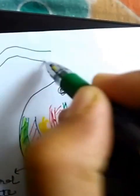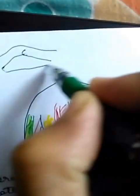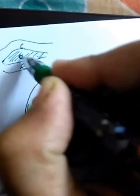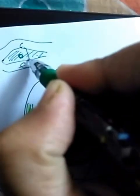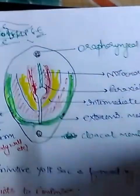As a summary: this is ectoderm, this is endoderm, and here is mesoderm. Adjacent to the notochord is paraxial mesoderm, next to that is intermediate mesoderm, most lateral is lateral plate mesoderm, and finally the extra-embryonic mesoderm.